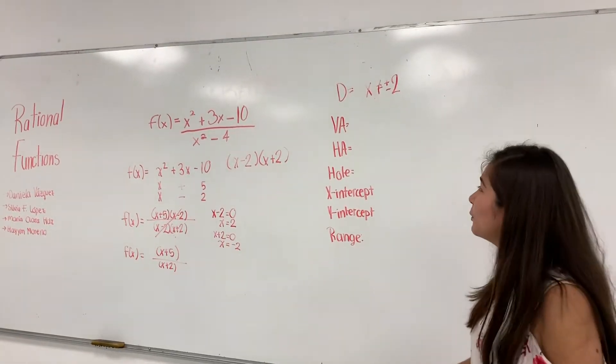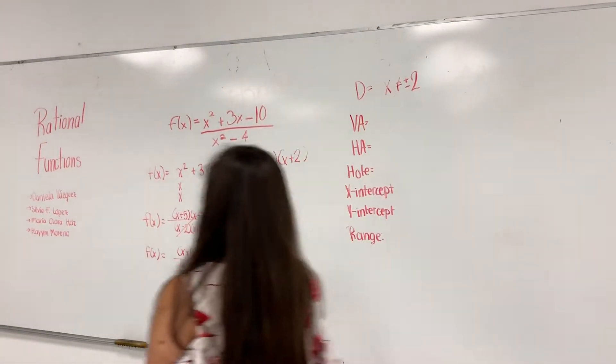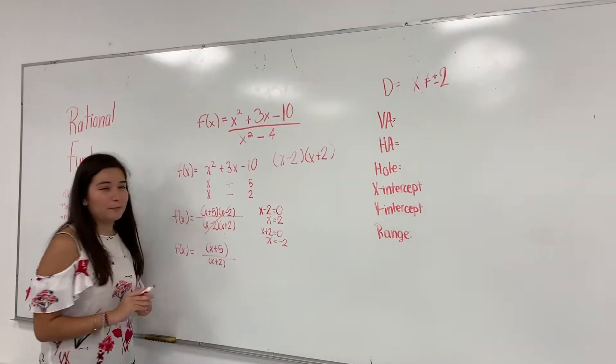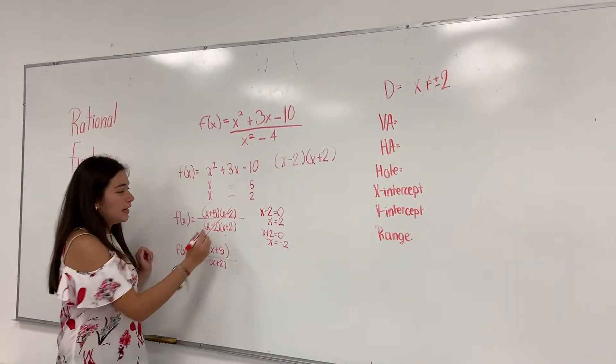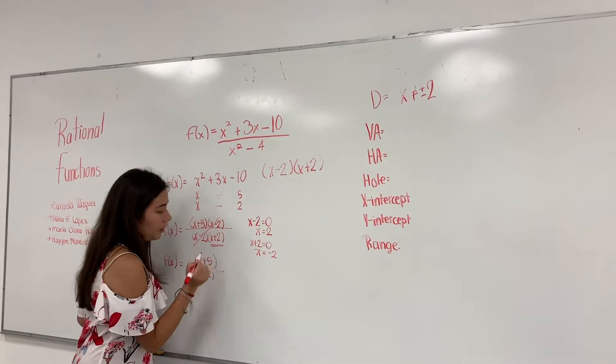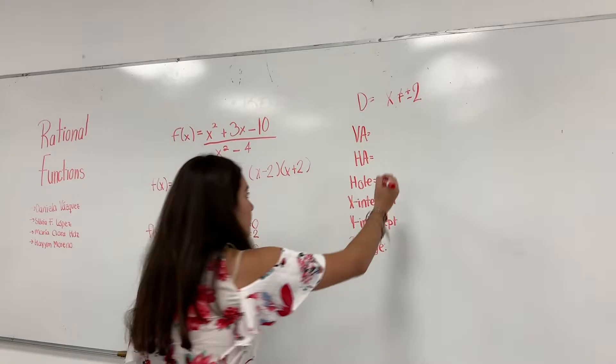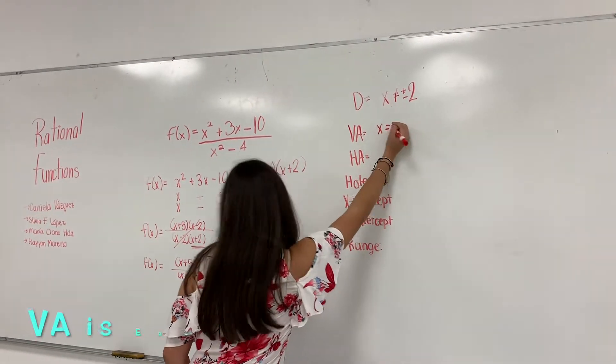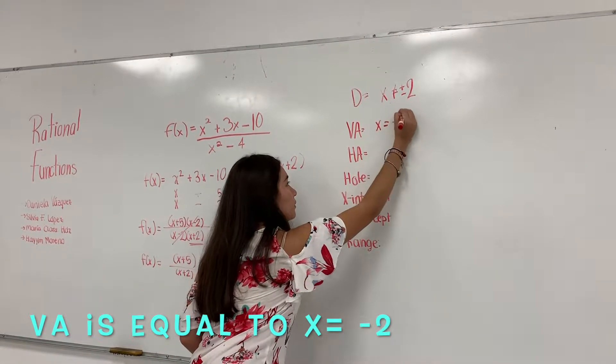For the vertical asymptote, we have to look back to our simplified function. We can see that this one is eliminated, so we don't count it. We only count this part. So we know that the vertical asymptote is x equals minus 2.